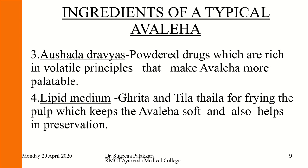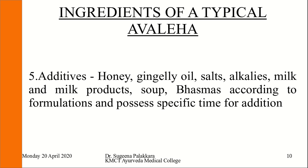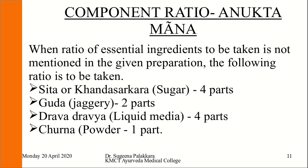Third is Aushadha Dravya, also known as Prakshepa Churna — these are powder drugs rich in volatile principles that make the Avaleha more palatable. Fourth is the lipid medium, which can be either ghee or tila taila for frying the pulp, keeping the Avaleha soft and aiding preservation. Fifth are additives like honey, gingelly oil, salts, alkalis, milk and milk products, soups, and bhasmas, added at specific times according to the formulation.